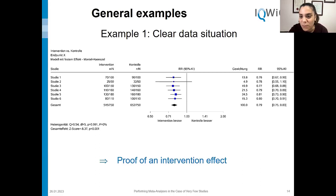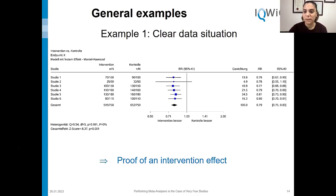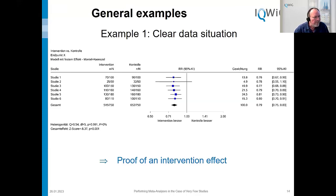Another question: if the prediction interval is calculated, does that mean the random effects model estimation is performed anyway? Yes — the prediction interval belongs to the random effects model; within the fixed effect model there is no prediction interval. If you see a forest plot with a prediction interval, the underlying model is the random effects model.